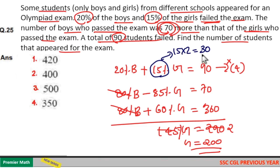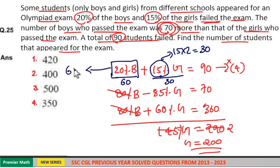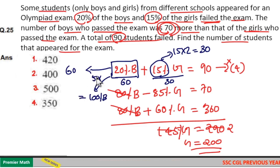So, if number of girls, 15% girls is 30, then 20% boys should be 60. Because 60 plus 30 is 90. If 20% boys is 60, then 20 into 5 is equal to 100 percentage boys. So, total number of boys should be 60 into 5, 300.